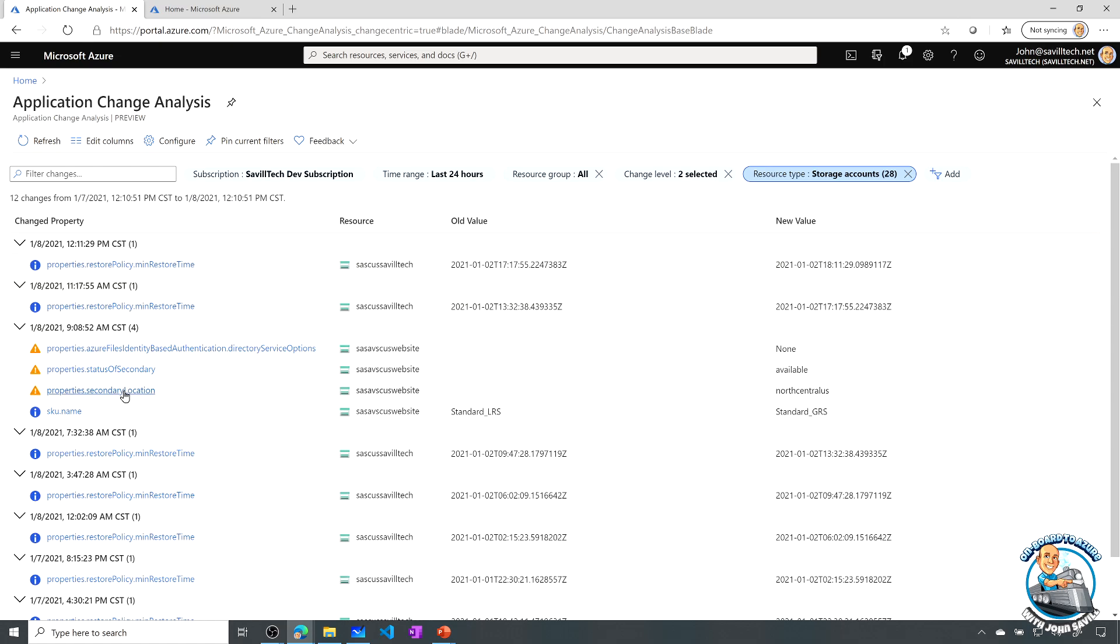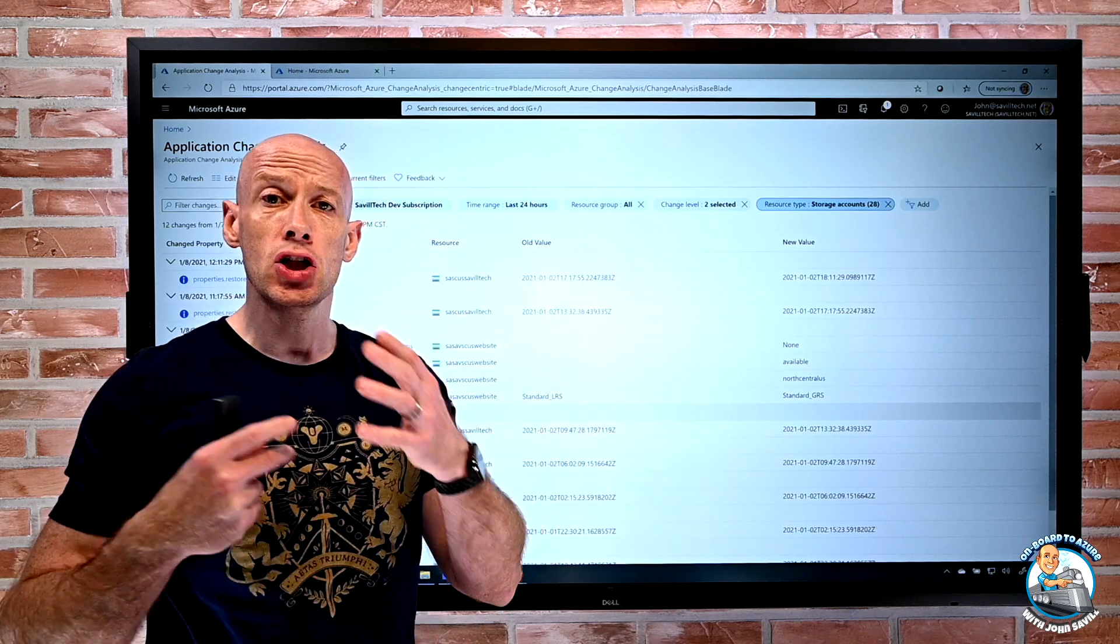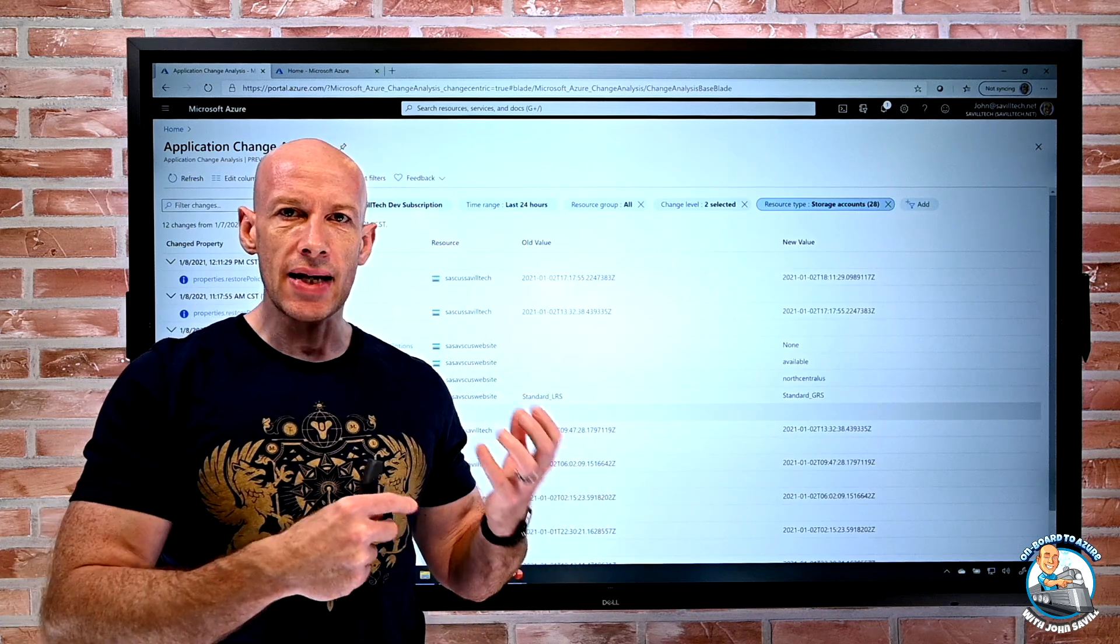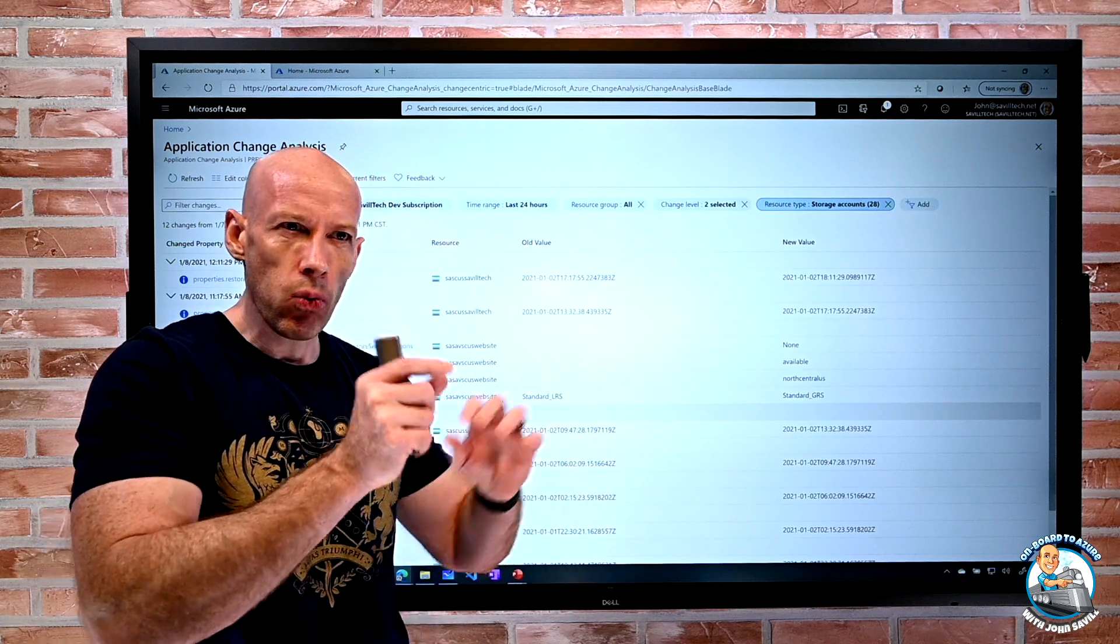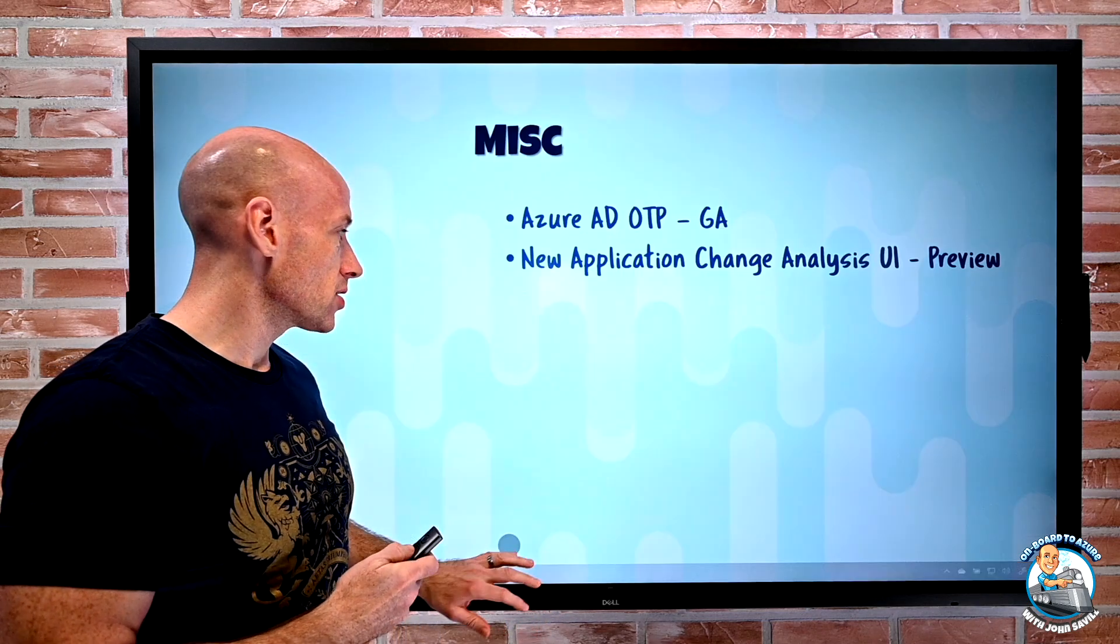So here, I can see the various things. Hey, look, the SKU name, I can see on the storage account on the 8th, changed from LRS. I'm looking over here to GRS. So it's just a nicer interface that's going to be available for us to actually be able to use that resource graph-based tracking. So if something breaks, I can now go and look at this application change analysis and see, well, what changed around this time? And it may help me actually fix the problem.